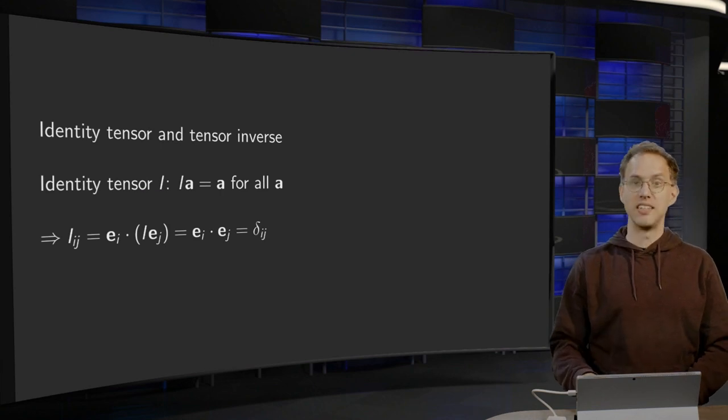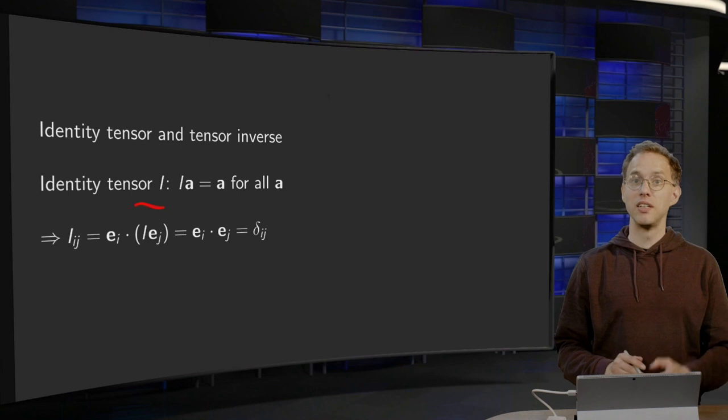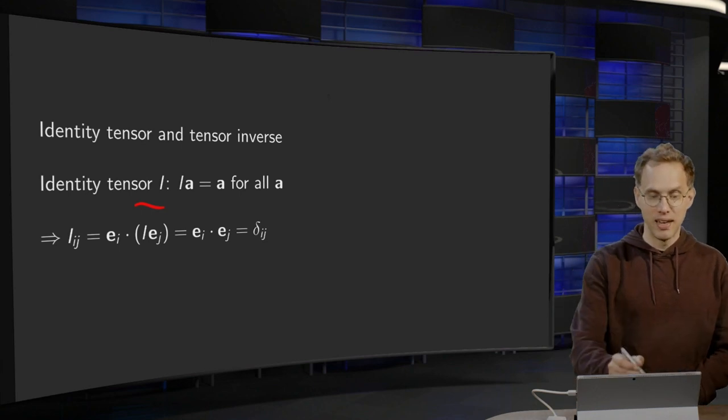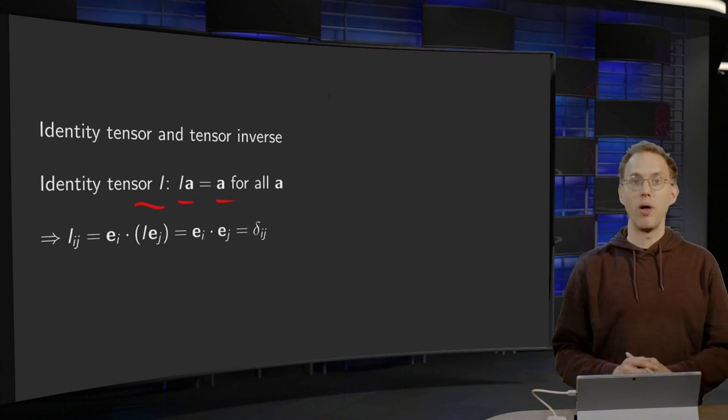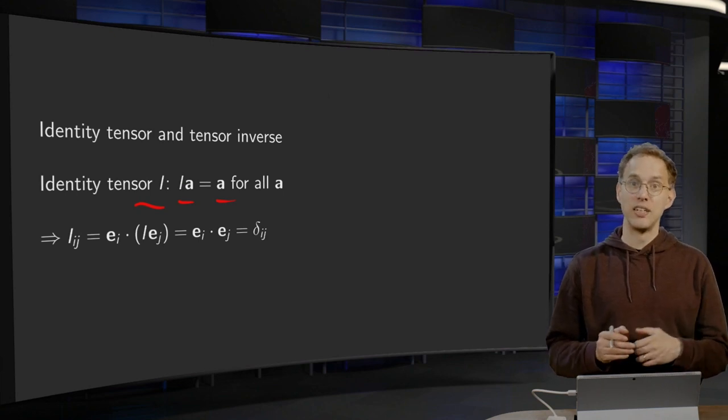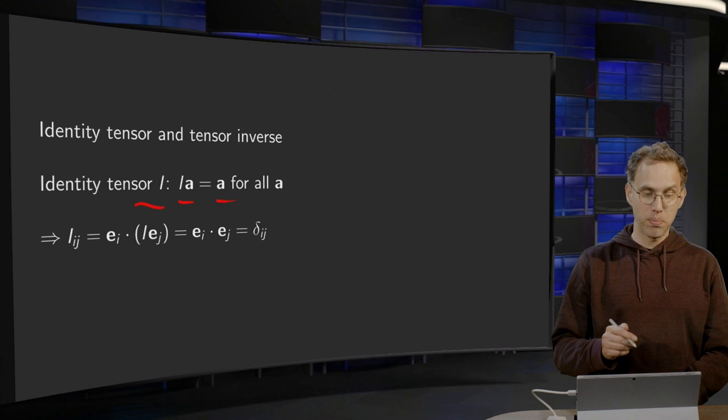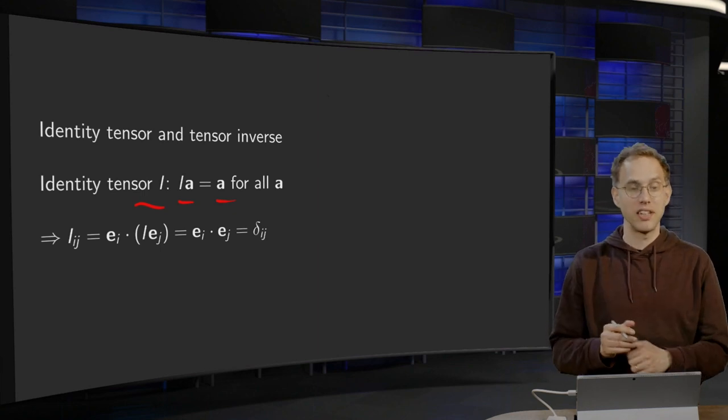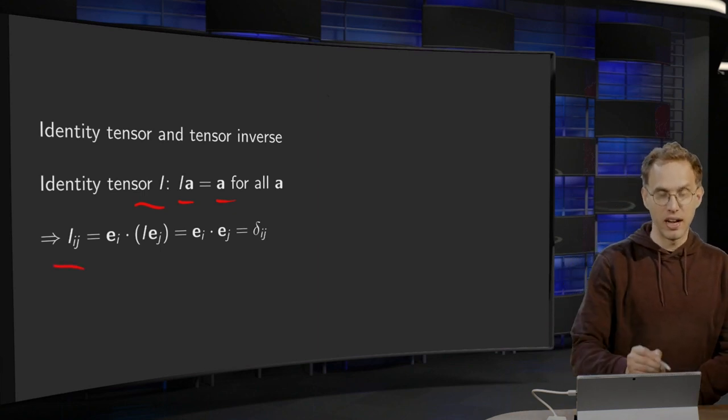First, the identity tensor I. What's that? Well, you can probably guess already. I times A equals A for all A, so I times A just leaves A as it is. What do you know about its components? What would happen if you tried to write this as a matrix? Well, your I_ij, as always,